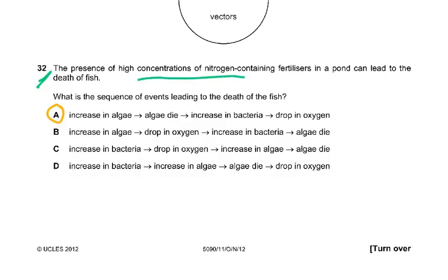Question 32: the presence of high concentration of nitrogen-containing fertilizer in a pond can lead to the death of fish. What is the sequence of events? The exam report says the nitrates will promote the growth of algae which will die and rot, thus using more oxygen and leading to the death of the fish. Increase in algae, algae die, increase in number of bacteria because now there's a lot of dead rotten stuff which is food for bacteria. When the bacterial number goes from 1 million to 10 million, they're going to use up the oxygen of the water. This drop in oxygen is going to kill the fish.